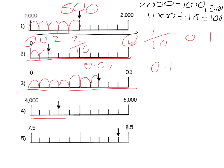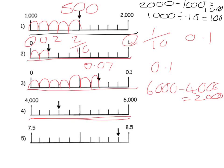Next example: 6000 take away 4000 gives us 2000, so the whole thing is worth 2000. Counting the jumps: 1, 2, 3, 4, 5, 6, 7, 8, 9, 10. So 2000 divided by 10 equals 200. Each jump is worth 200. So I'm going 200, 400, 600.